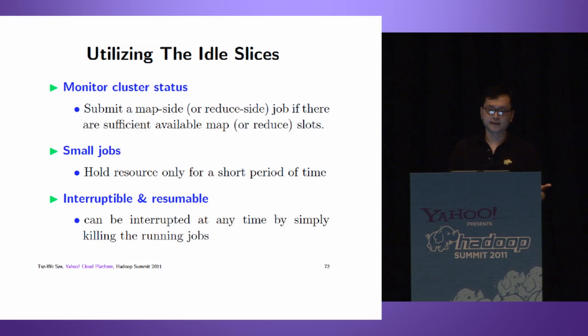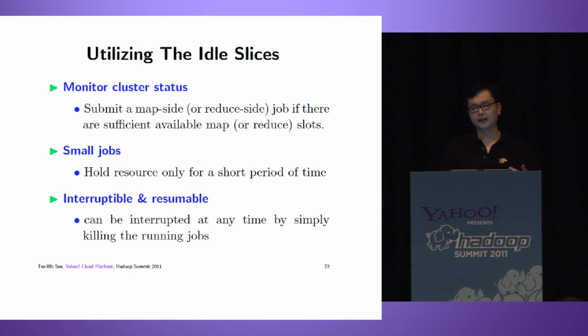In our system, we monitor the cluster status. We try to utilize the idle slices of our cluster. When there are available map slots, we submit a map-side job. When there are available reduce-side slots, we submit a reduce-side job. We keep our jobs small so they hold resources only for a short period of time. We make our computation interruptible and resumable. We can interrupt computation anytime by simply killing all running jobs. Later, we can restart the system, which picks up all intermediate values and resumes the computation.